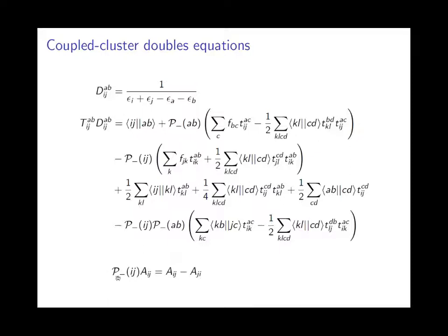P is an anti-symmetrizer, and its action is shown below. The coupled cluster doubles theory is probably one of the simplest in the coupled cluster family, and as we go to more complicated theories, these equations only get worse. The question is: how do we implement these equations easily, make the code readable, and make the process of implementing them tractable for humans?